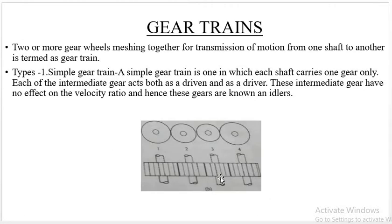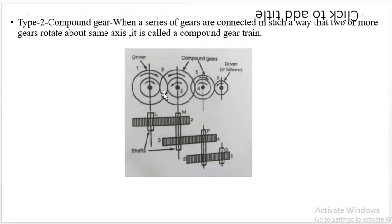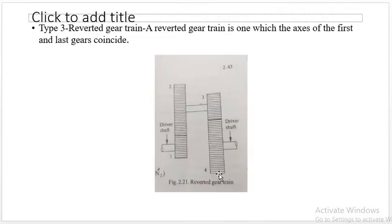In simple gear trains, each shaft has one gear. In a compound gear train, we have a combination where in one shaft there are two gears. This arrangement with two gears on one shaft is called a compound gear train.